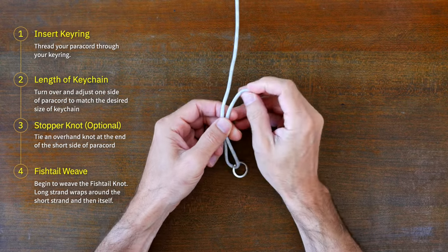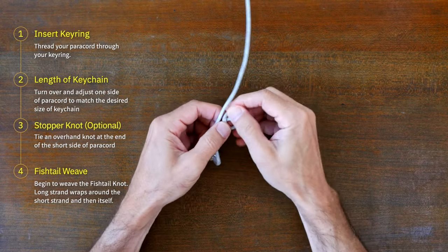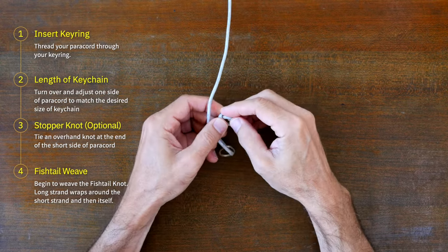I like to now tie a little overhand knot at the end of the short side to work as a stopper knot, but this step can be skipped.